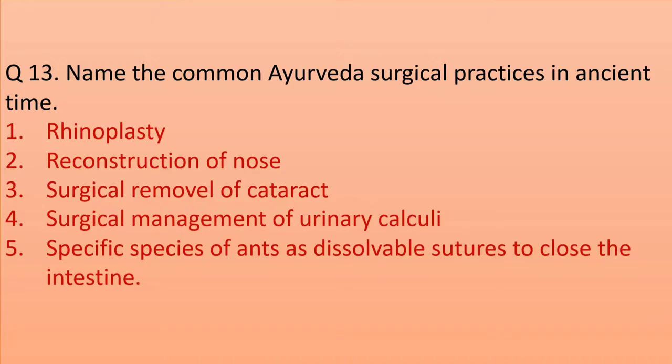Name the common Ayurveda surgical practices in ancient times. First is rhinoplasty; second, reconstruction of nose; third, surgical removal of cataract; then surgical management of urinary calculi — treatment of reproductive health diseases was also practiced in Ayurveda at that time. Additionally, specific species of ants were used as resolvable sutures to close the intestine.